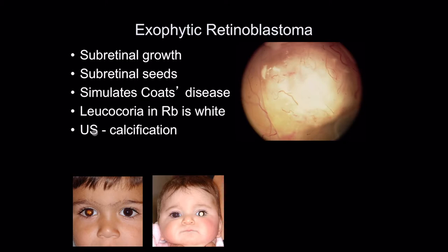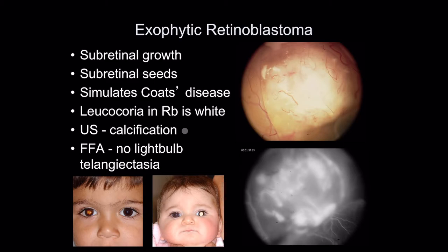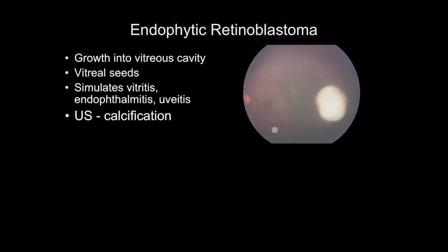On ultrasound in retinoblastoma there's a calcified mass, and on fluorescein angiography there's no light bulb telangiectasia. Note also that vessels are diving into the tumor — they're feeding the tumor. In Coates disease, you don't generally see that.